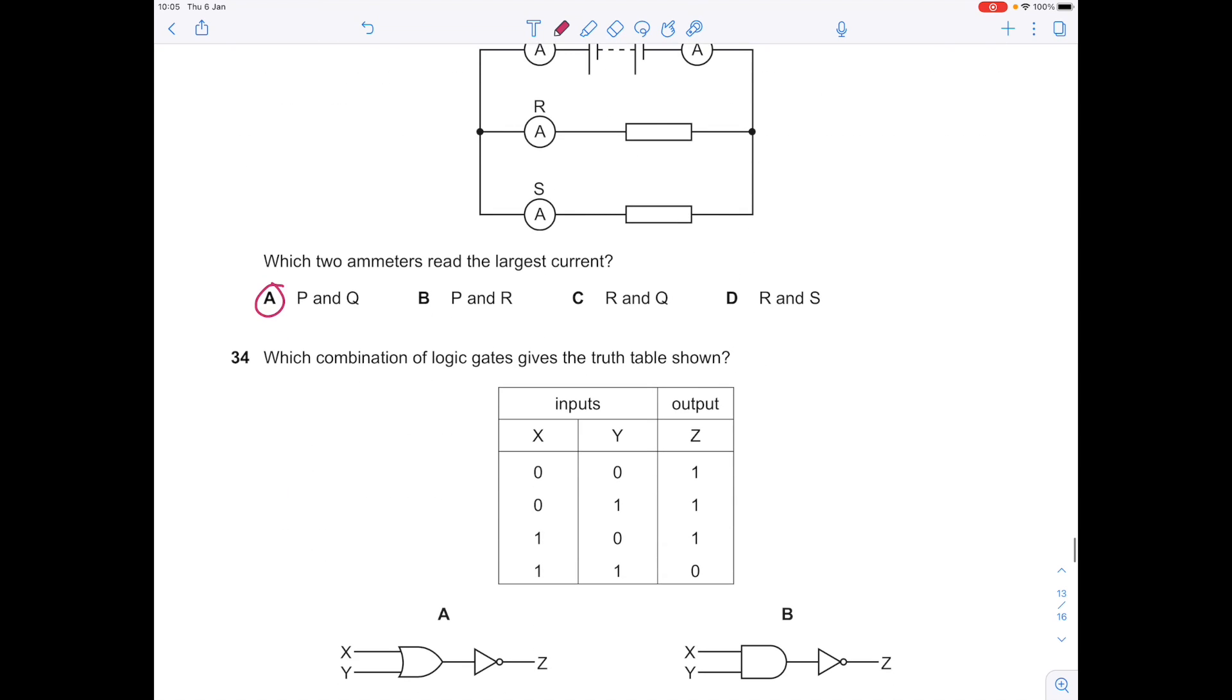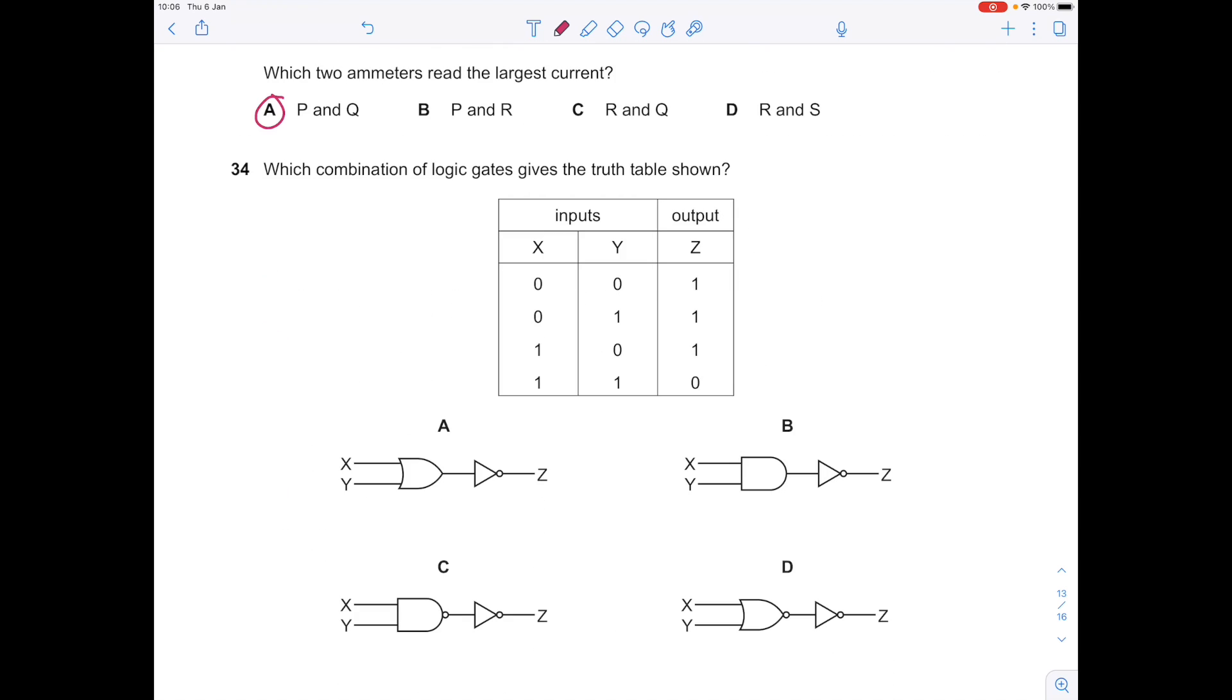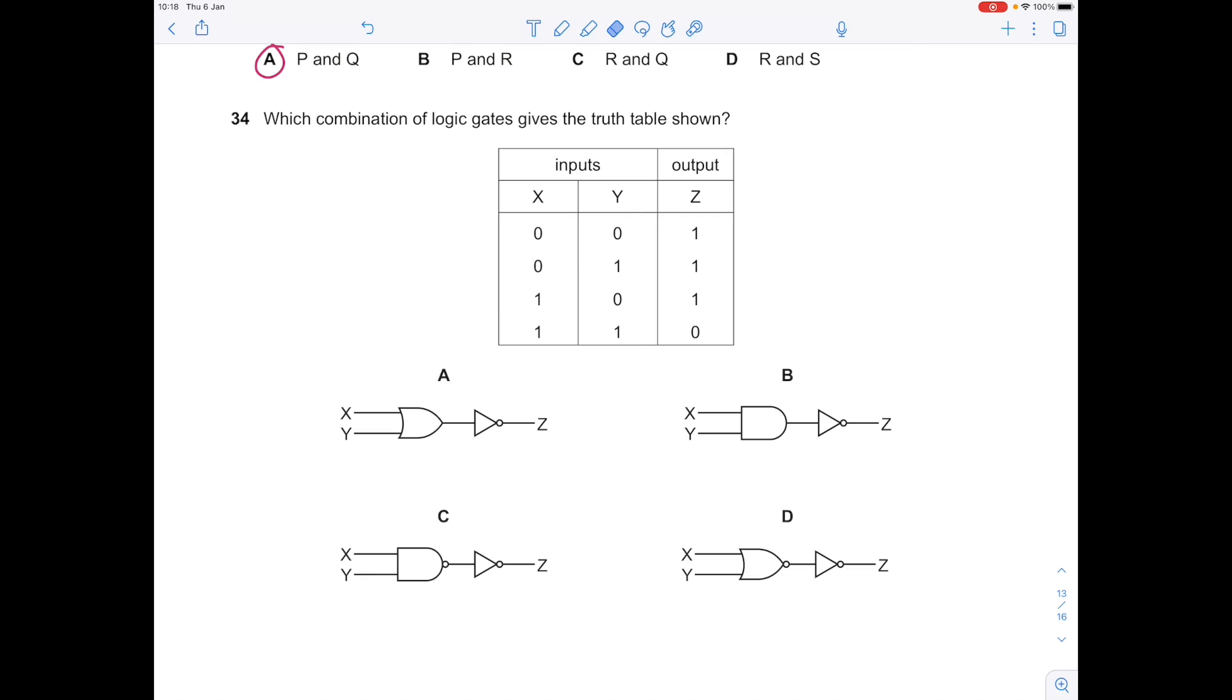Which combination of logic gates gives the truth table shown? To do this, we need to take each of these logic gates and compare the inputs from the table with them. In A we have an OR gate and a NOT gate. This means that if either X or Y is 1, then our output from the OR gate will be 0 and the output from the NOT gate would be 1. So the top line is correct, so far so good.